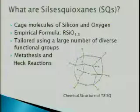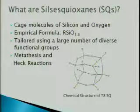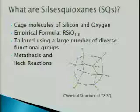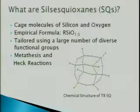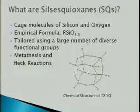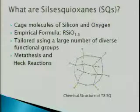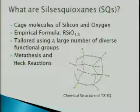What are silsesquioxanes? They are cage molecules made of silicon and oxygen atoms with the empirical chemical formula RSiO1.5. They are easy to manufacture, inexpensive, and thermally strong, thus gathering much interest in recent years as a nano-building block. These molecules can also be tailored using a large number of diverse functional groups, shown as R in this diagram.